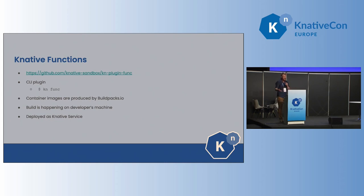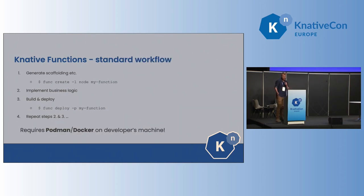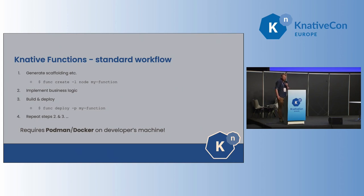Once the container is produced, then it's deployed as a standard Kubernetes native service. The standard workflow for developing a function is: I will create, let's say, a node function. I will run the first command, then implement the business logic, and then deploy my function — and I can repeat those steps. This is the step that requires Podman or Docker on the developer's machine.